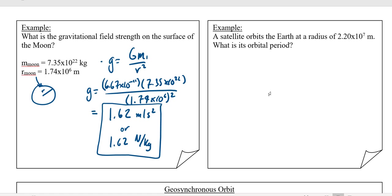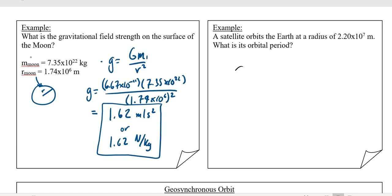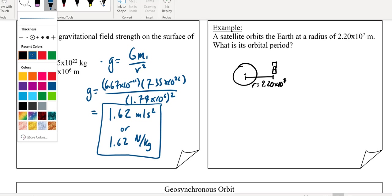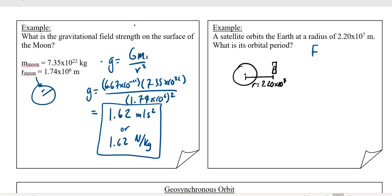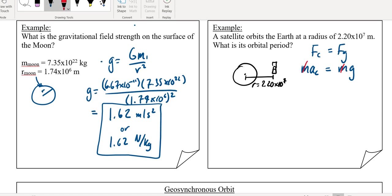A satellite orbits the Earth at a radius of 2.20×10⁷ m. We can relate this back to circular motion to find the orbital period. We know Fc equals Fg, and centripetal force is mass times centripetal acceleration, while the force of gravity is mass times the gravitational field. Since gravitational field is an acceleration, the satellite's mass cancels out, and centripetal acceleration must equal the gravitational field strength g.